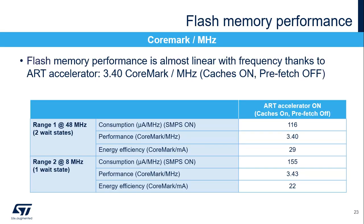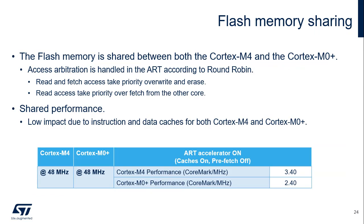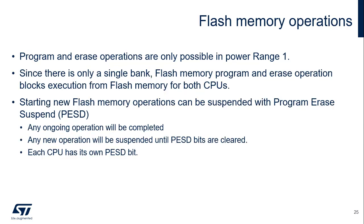The performance of the flash memory is almost linear with frequency using the ART accelerator. The CoreMark score is 116 at 48 MHz, which corresponds to 3.40 CoreMark per MHz with the instruction cache and data cache enabled and prefetch buffer disabled. The flash memory is shared between the Cortex-M4 and the Cortex-M0+; both CPUs use the flash memory to execute instructions. The performance of the flash memory has minimal impact due to the ART accelerator. During simultaneous code execution, the Cortex-M4 CoreMark per MHz is 3.40 at 48 MHz with Cortex-M0+ also at 48 MHz, instruction cache and data cache enabled, and prefetch buffer disabled.